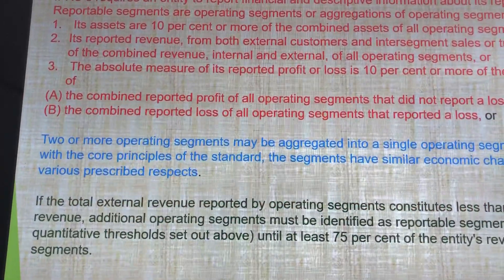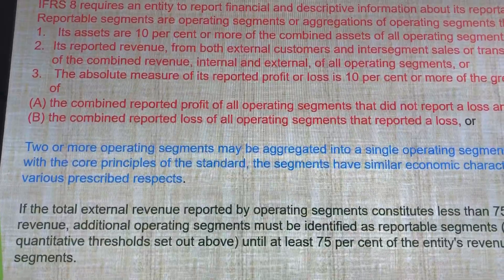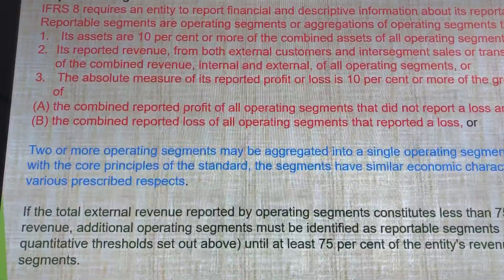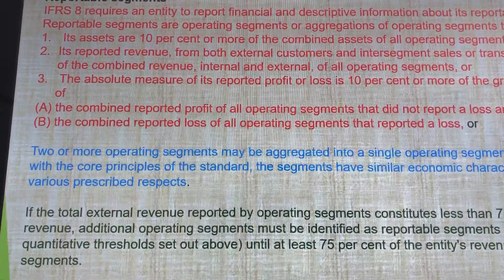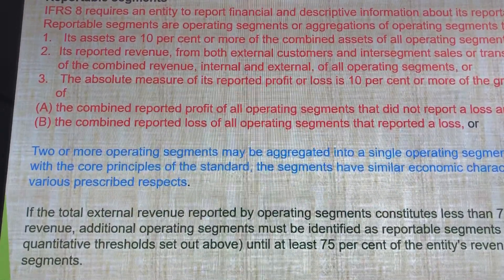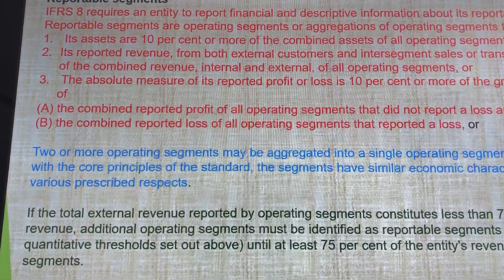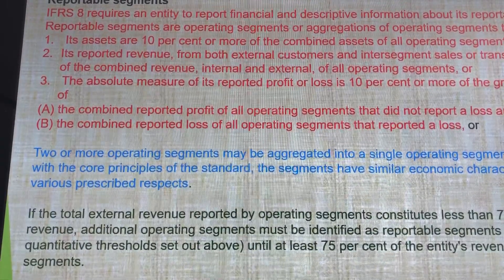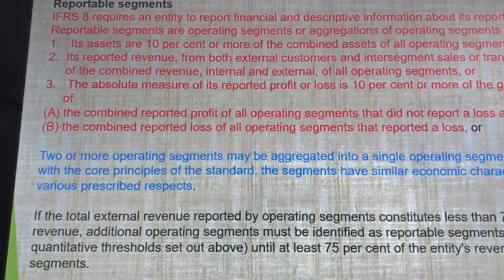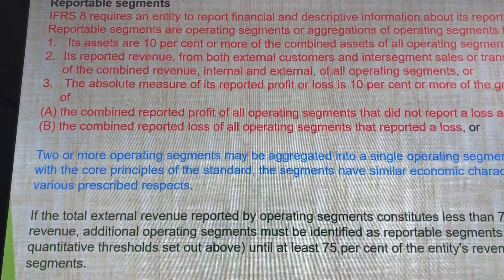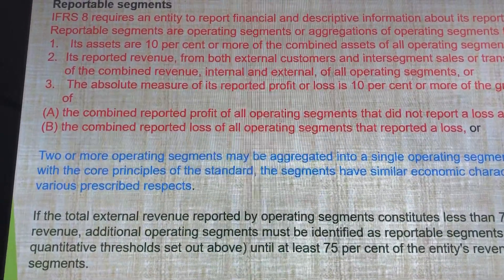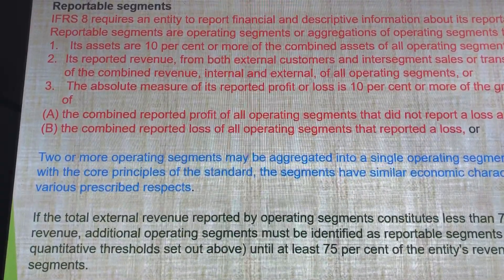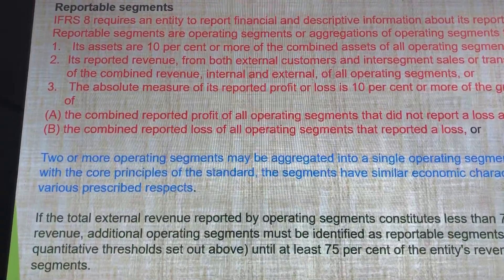Now let's talk about the reportable segments of IFRS 8. This requires: number 1, 10% of the assets or more must be combined of all the operating segments; and also 10% of the reported revenue, both from internal customers and intersegment sales or transfers; and also the absolute measure of its reporting profits must be 10% or more.